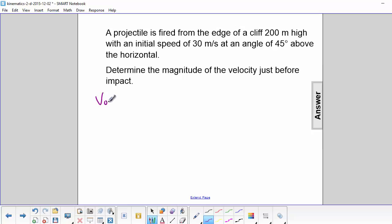We know the initial velocity in the x direction was v₀ cos(45°), which came out to about 21 m/s. And v₀ in the y direction was v₀ sin(45°), which is the same thing, 21 m/s.